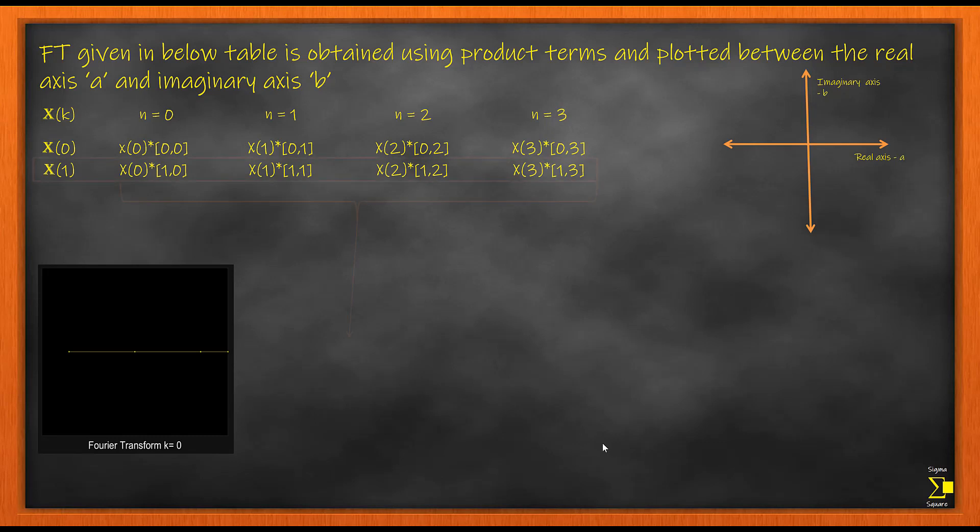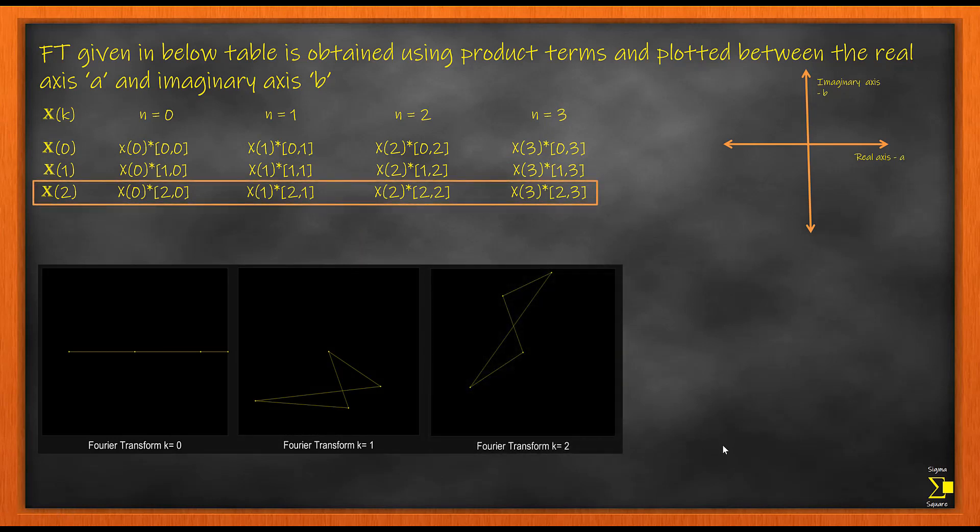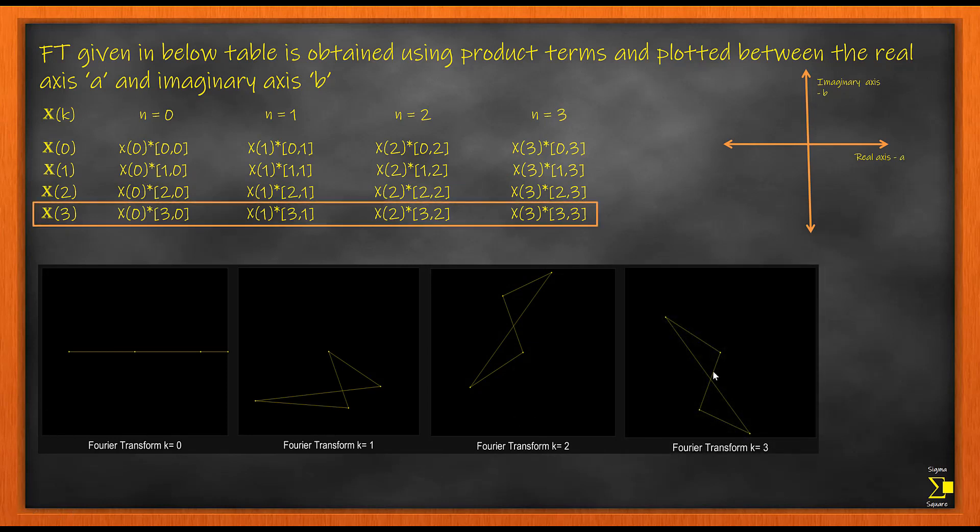For the second row we have another 4-point plot. For the third row we again have another 4-point plot and so on. This is what we call our FT cycle representation, Fourier Transform represented in cycles for different values of k.